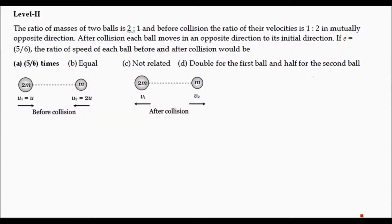Let's see some problems based on level 2. The first problem: the ratio of masses of two balls is 2:1, and before collision the ratio of their velocities is 1:2 in mutually opposite directions. After collision each ball moves in the opposite direction to its initial direction. The coefficient of restitution E is equal to 5/6. Find the ratio of speed of each ball before and after collision.